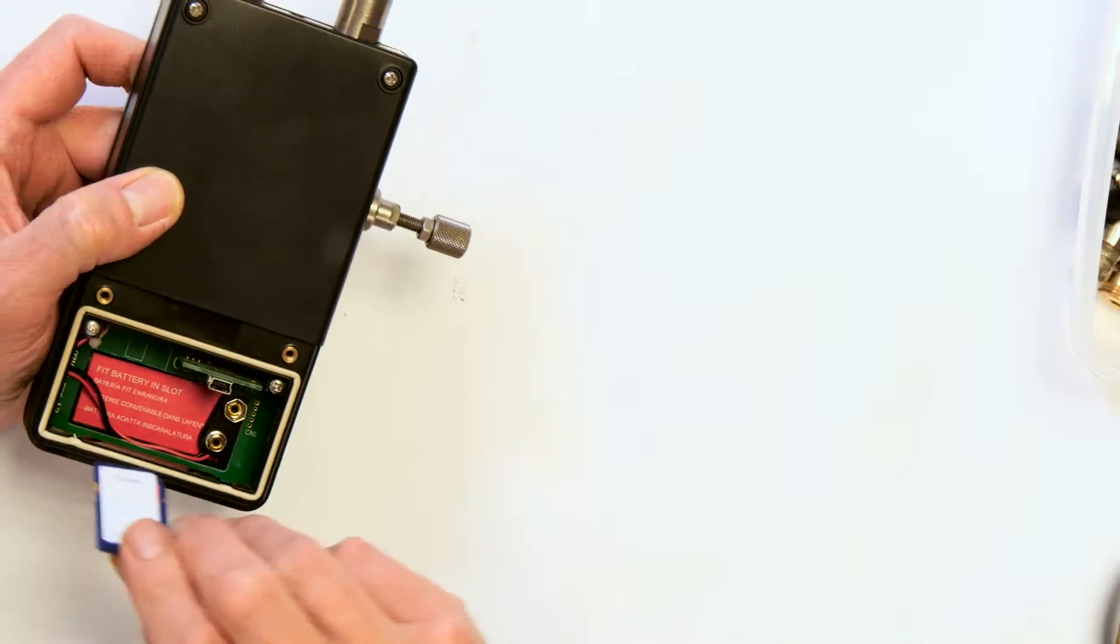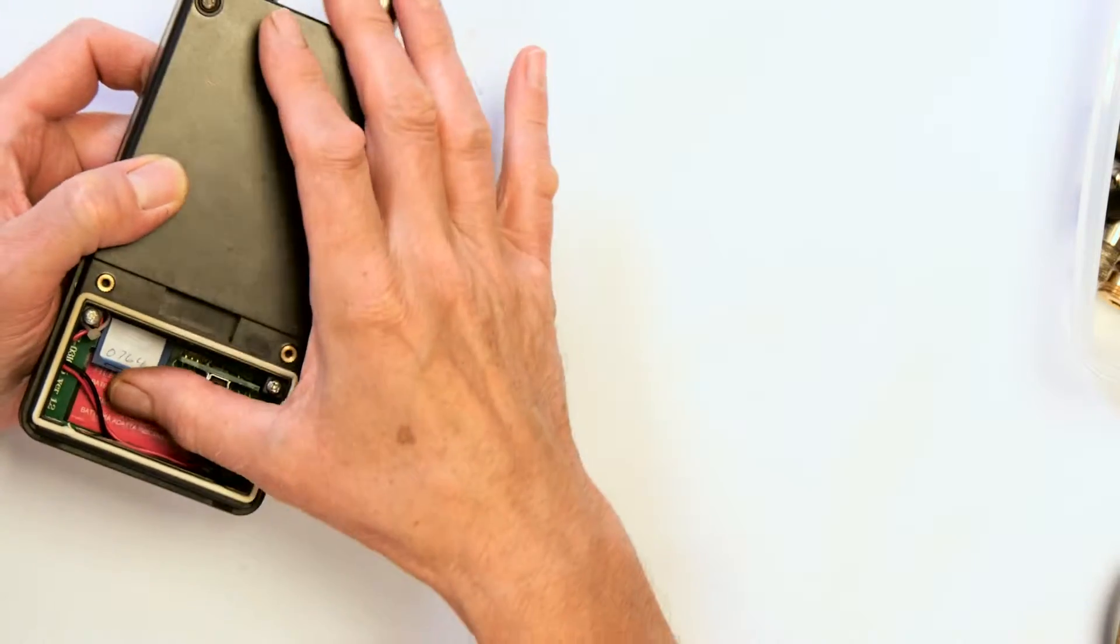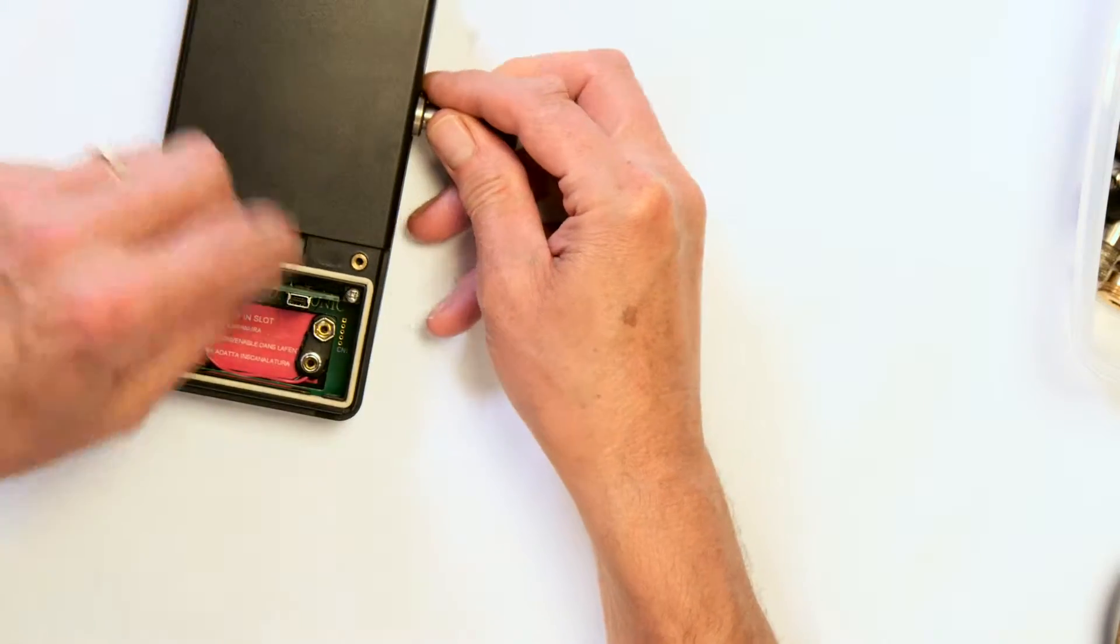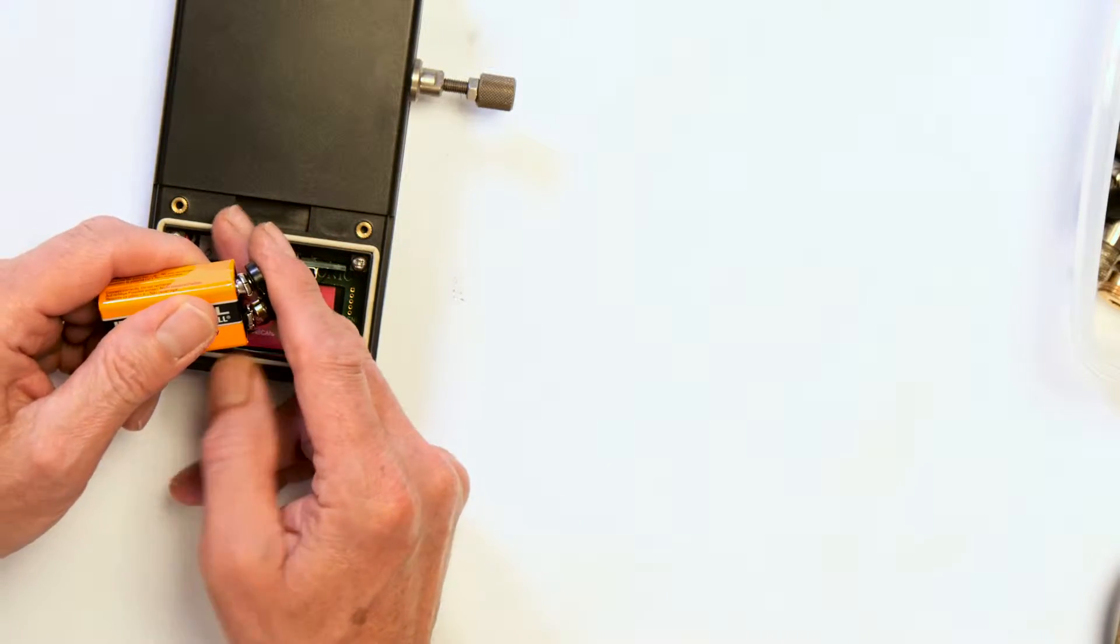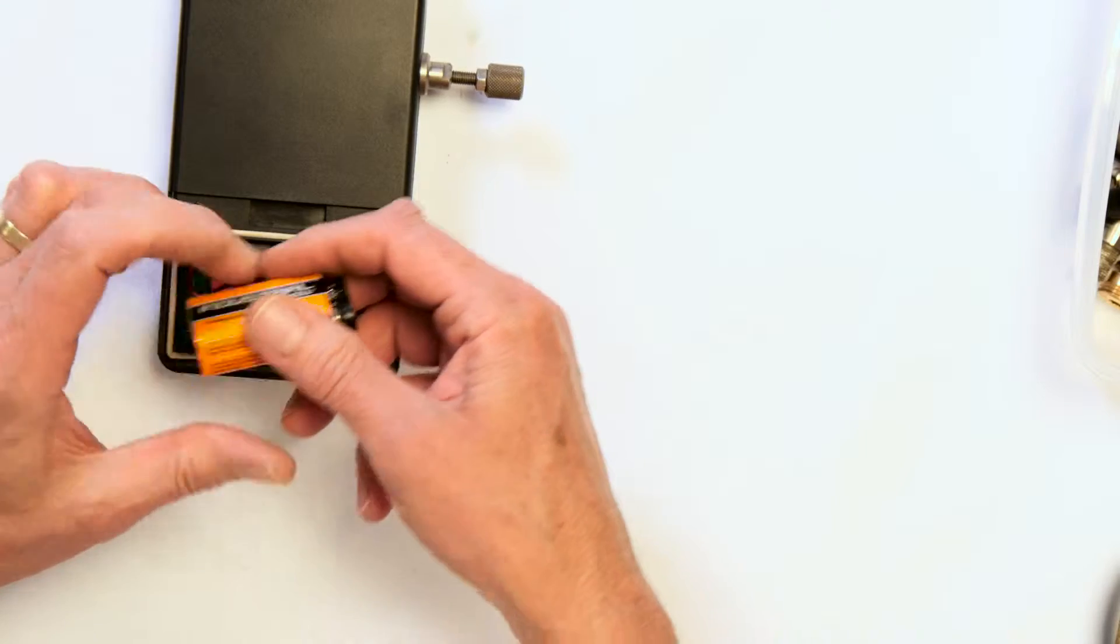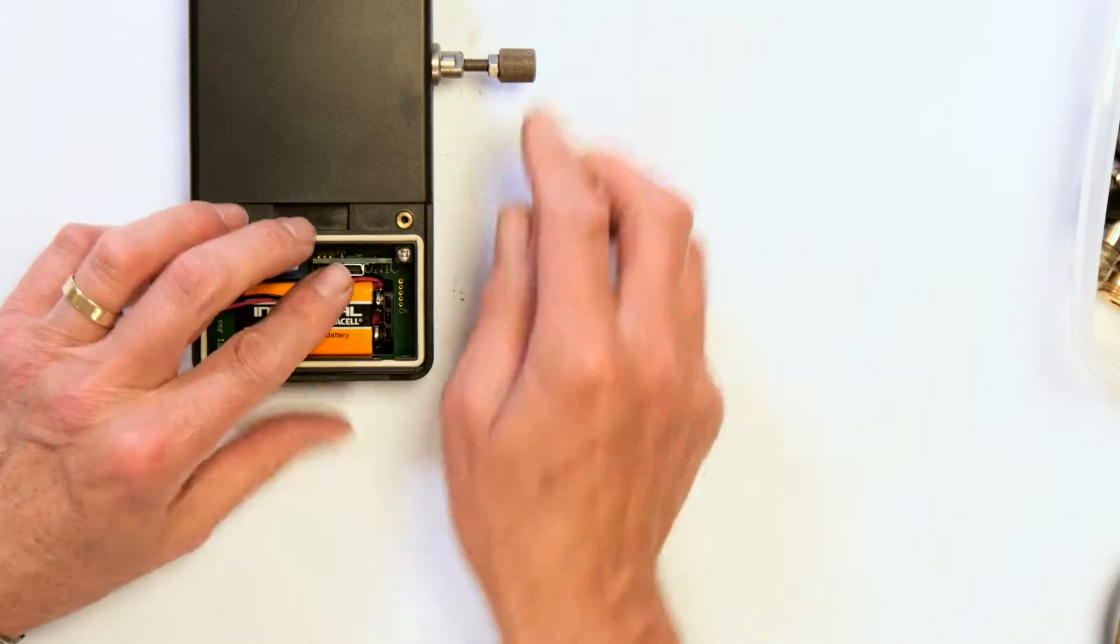The SD card has now been updated with the latest valve list. And it's ready to go back into the AC6 and for the AC6 to be moved on for recalibration. We're back in its slot. New battery goes in. We're now ready to go through to the next stage of the process.